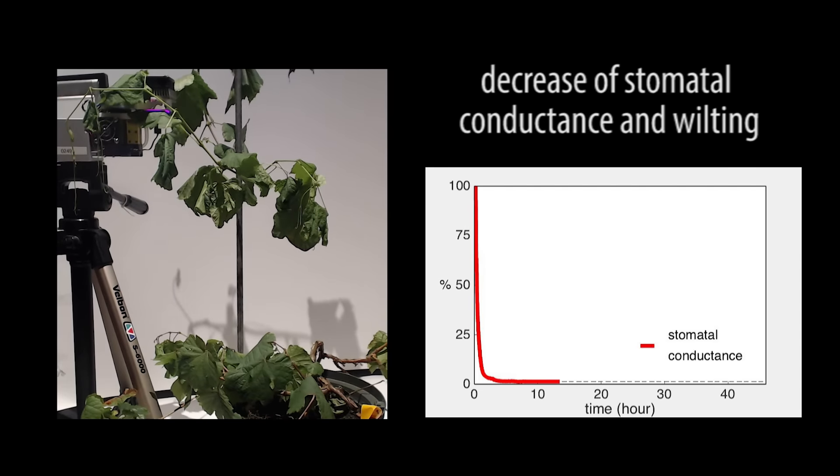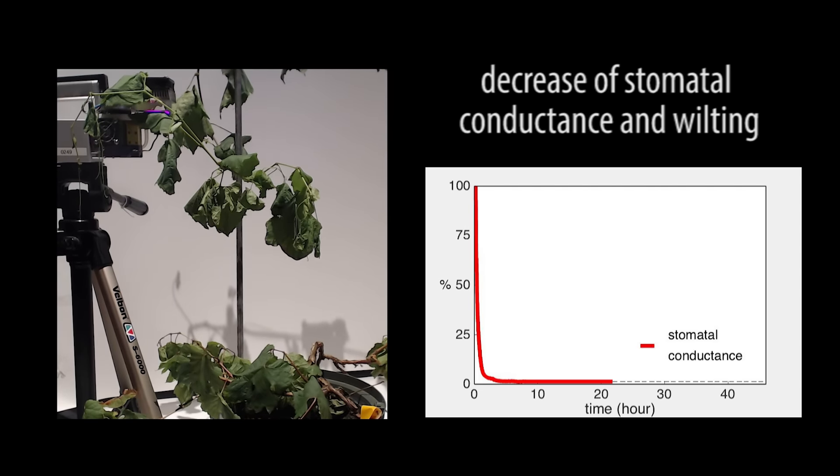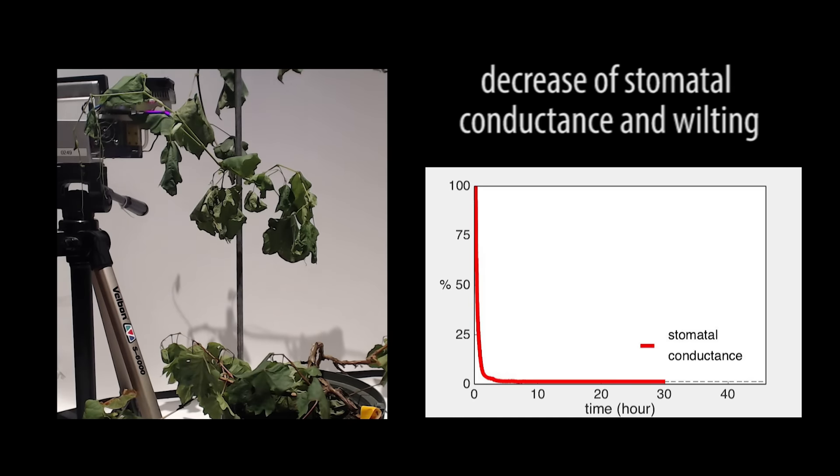Disconnecting the plant from its roots led to quick stomatal closure, as shown by the red curve, and wilting.